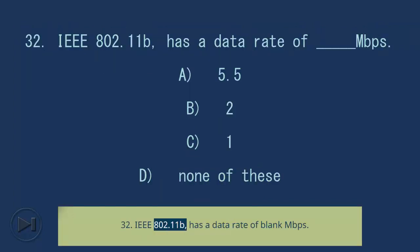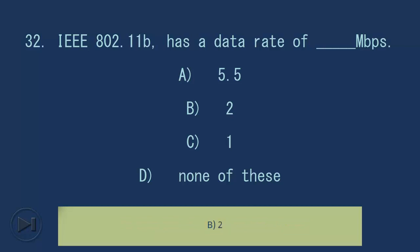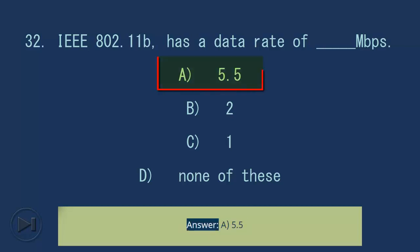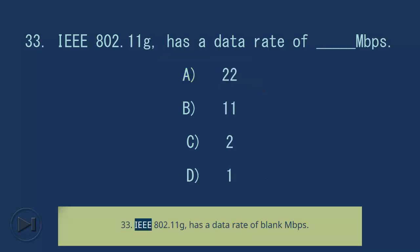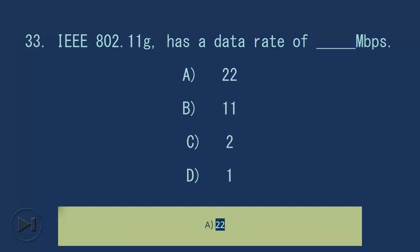Question 32: IEEE 802.11b has a data rate of blank Mbps. A. 5.5, B. 2, C. 1, D. None of these. Answer: A. 5.5. Question 33: IEEE 802.11g has a data rate of blank Mbps. A. 22, B. 11, C. 2, D. 1. Answer: A. 22.